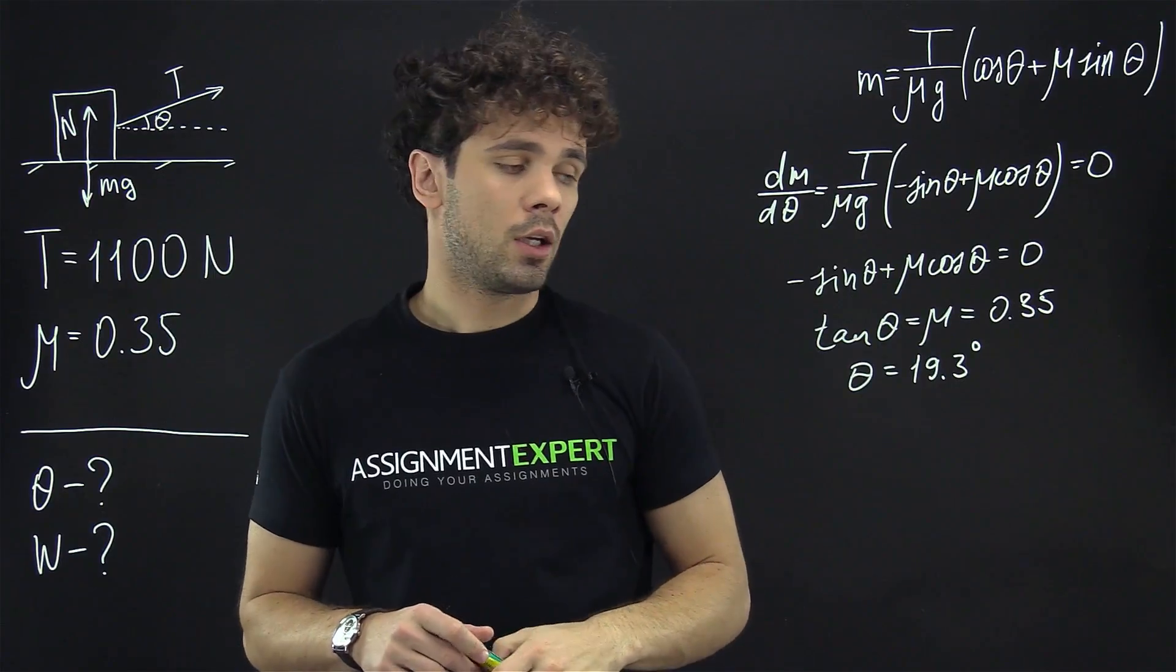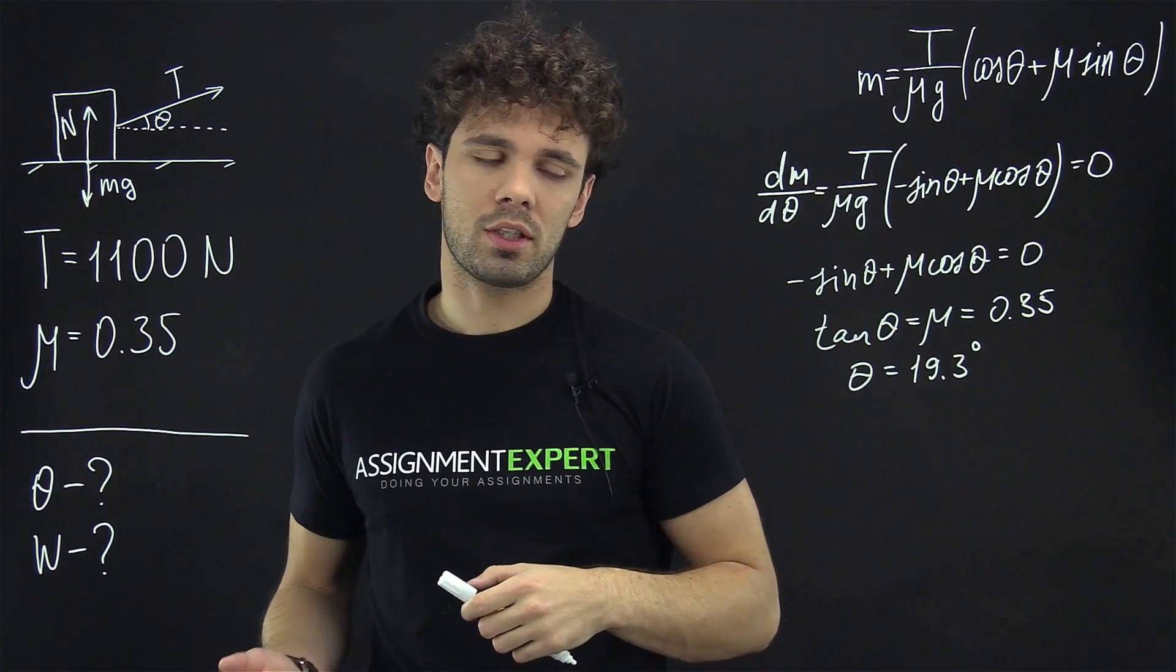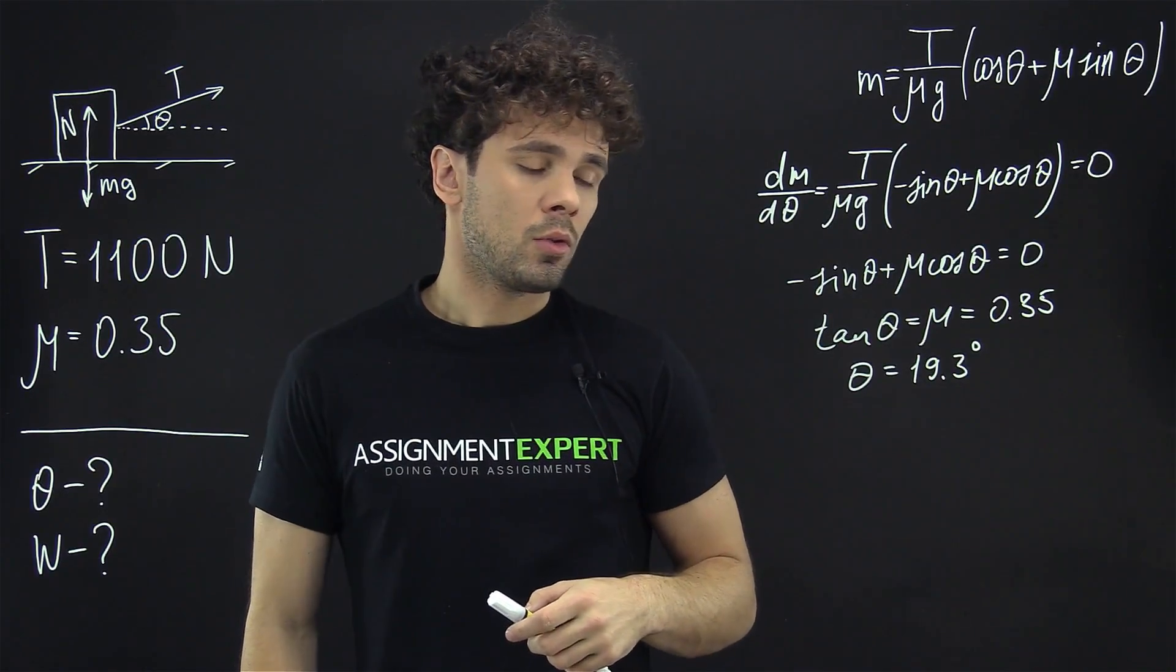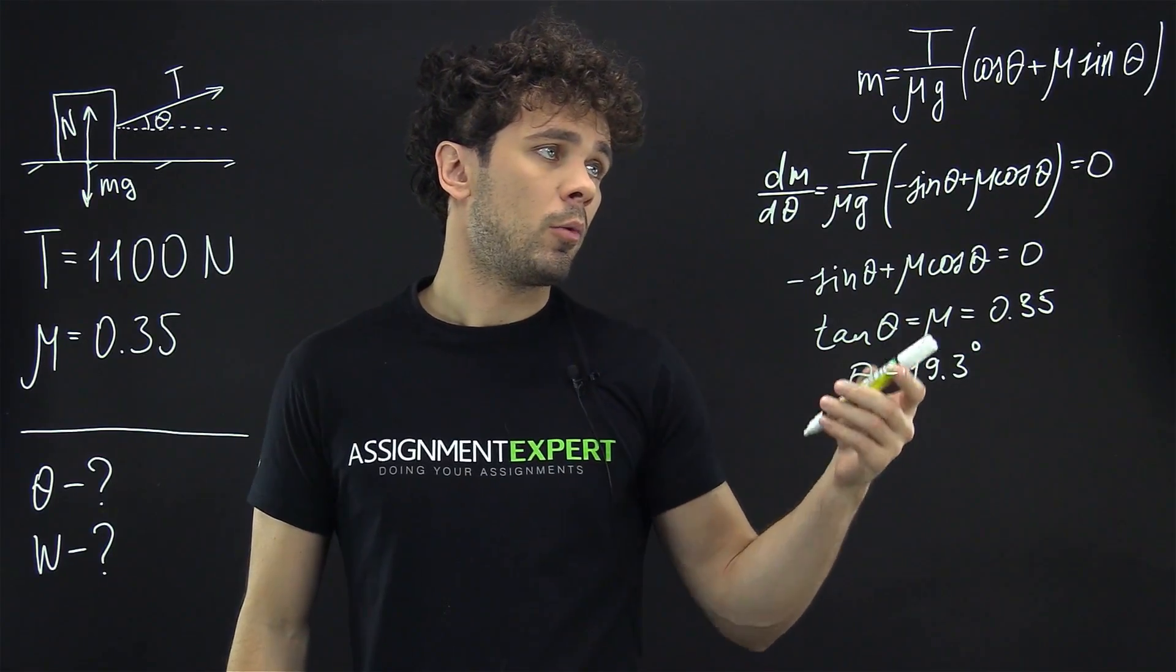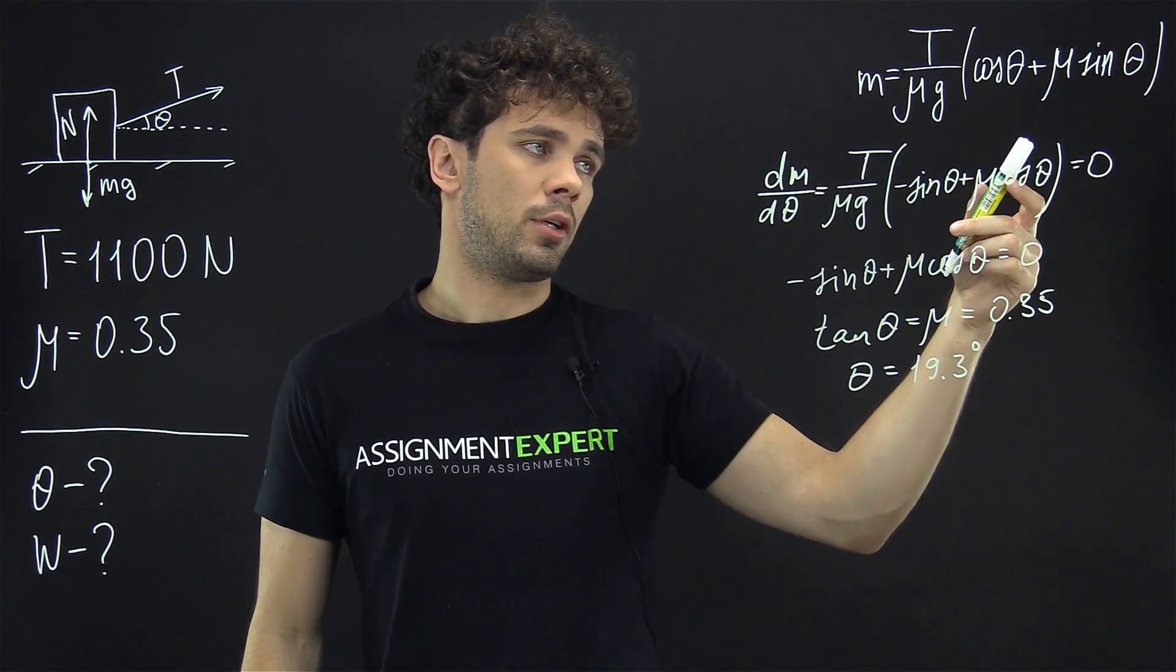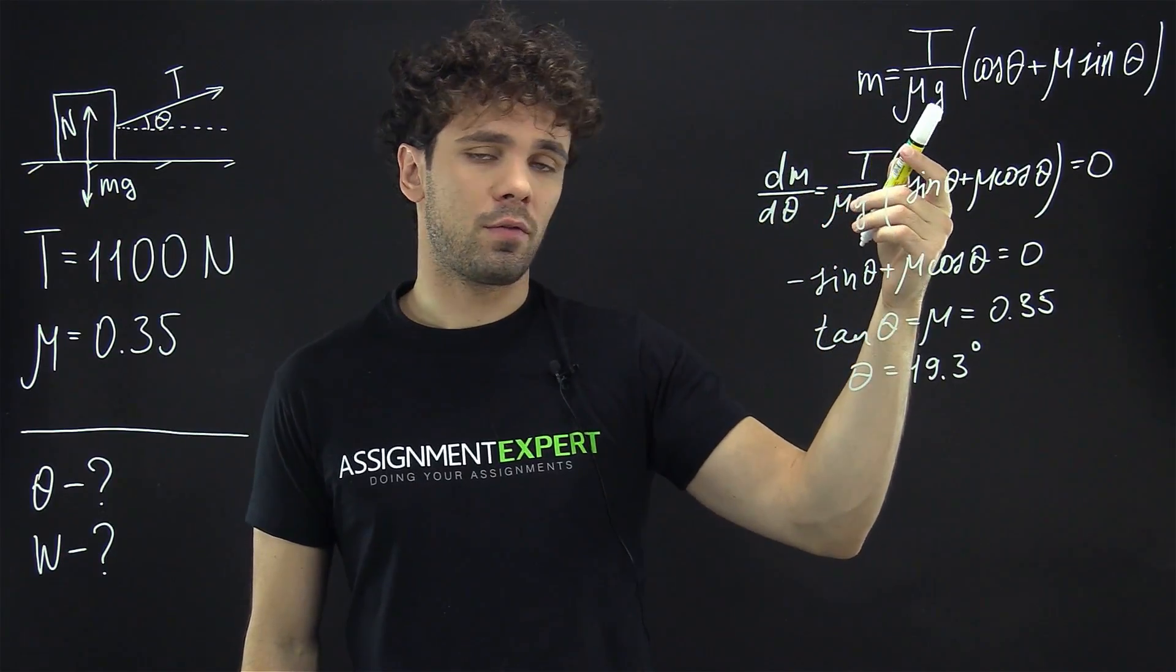Okay, so here we found the angle at which we can pull the highest amount of mass of the box and the sand. Now to find the weight of the box and the sand at this angle, we need to return to formula over here. The weight is actually the product of mass and the free fall acceleration.